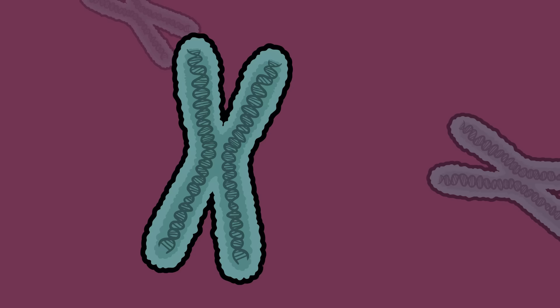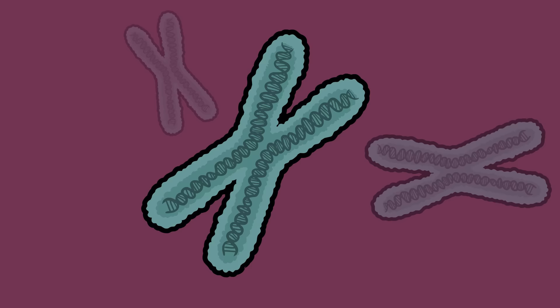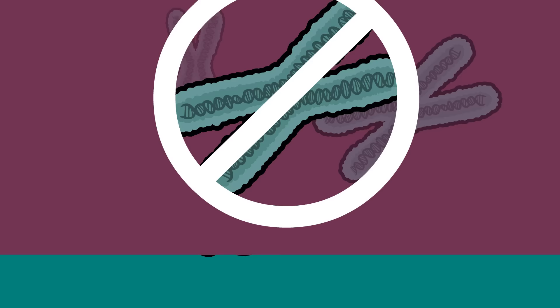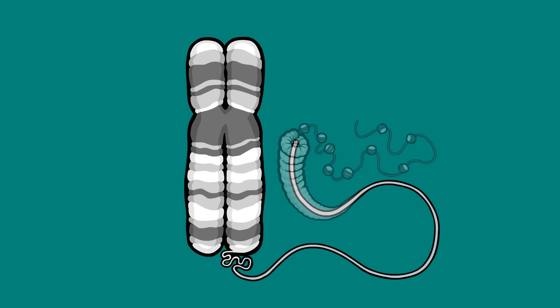You may have seen images showing DNA trapped inside a chromosome, sort of like this. This is not how chromosomes hold their DNA. If you were to unravel a chromosome, you would see that it's made of a thread, sort of like a spool of yarn.